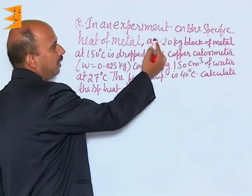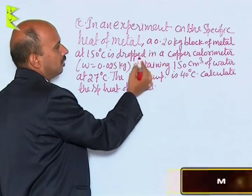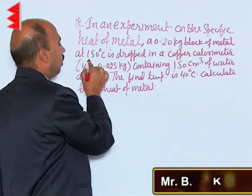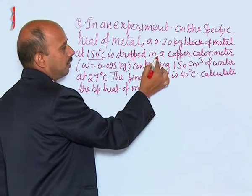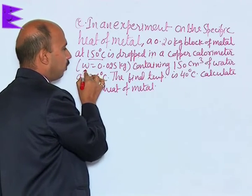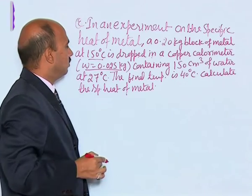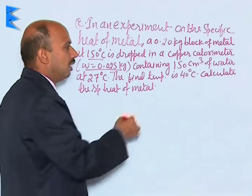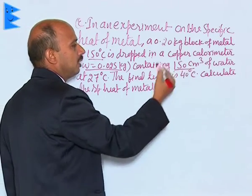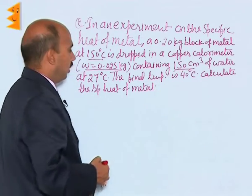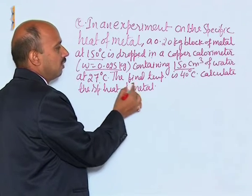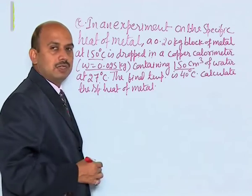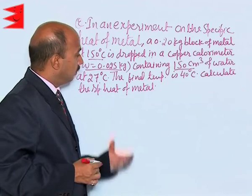In an experiment on the specific heat of metal, a 0.20 kg block of metal at 150 degree Celsius is dropped in a copper calorimeter of water equivalent 0.025 kg, containing 150 centimeter cube of water at 20 degree Celsius. The final temperature is 40 degree Celsius. Calculate the specific heat of the metal.